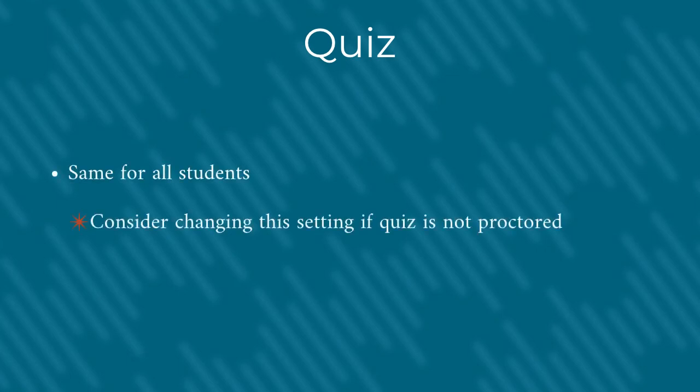Finally, the quiz is designed to be the same for all students with randomness turned off. You may consider changing this setting if the quiz is not in a proctored environment. Feedback is also turned off, obviously, so students won't know if their answers are right or wrong while they're working.